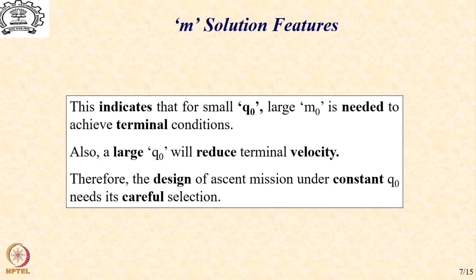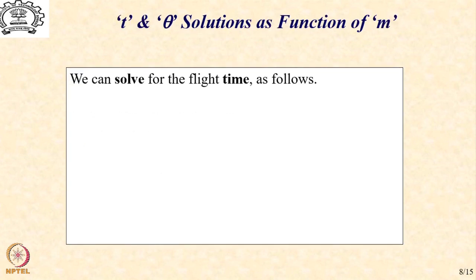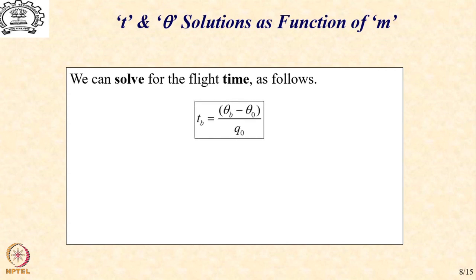We need to also realize that as the trajectory solution is extremely sensitive to the q0 value, we need to be very careful with the selection of this number, as we will see through an example. Let us also look at the solution for time, and the solution of time as a function of mass. Because now there is an interplay of variables, we can express different variables in terms of different quantities.